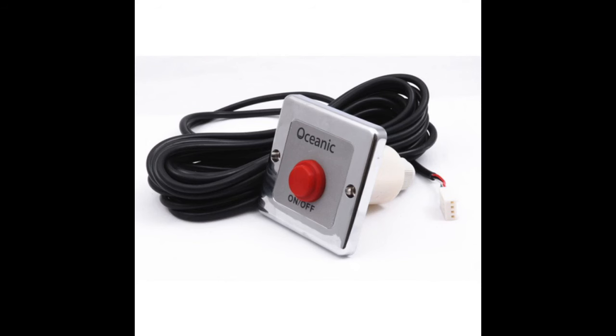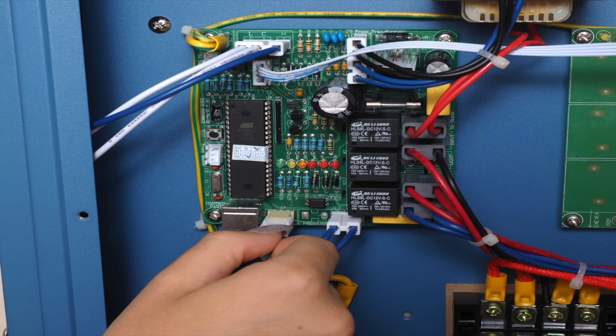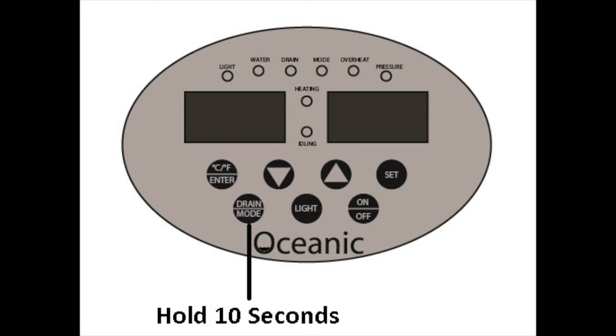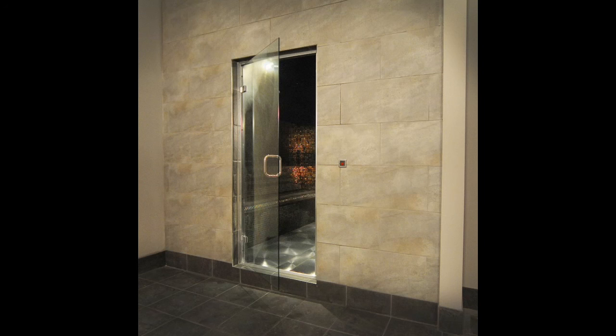Steam on demand: For commercial operators, use our steam on demand mode to save on electricity bills. Install the keypad in the plant room and set the temperature. Hold the drain button for 10 seconds and it will activate steam on demand mode. When the button is pushed, it will illuminate and the steam generator will steam for 30 minutes.